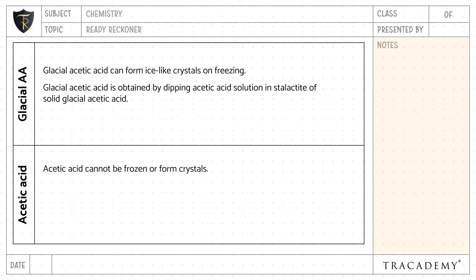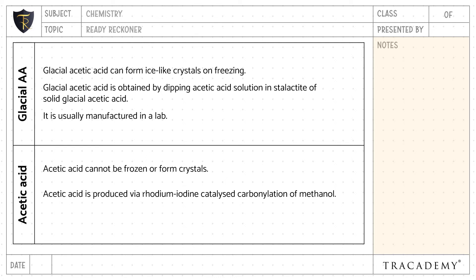Glacial acetic acid is obtained by dipping acetic acid solution in solid glacial acetic acid, whereas acetic acid is produced via rhodium-iodine catalyzed carbonylation of methanol. Glacial acetic acid is usually manufactured in a lab, whereas acetic acid is naturally occurring and found in plants and animal organisms.